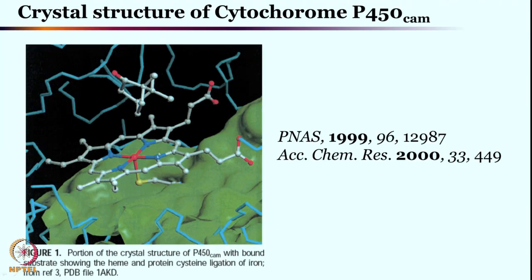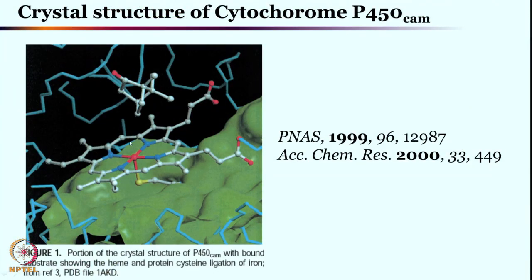Cytochrome P450's crystal structure — this is the camphor-bound crystal structure — shows the heme side, but one notable change from hemoglobin, myoglobin, and cytochrome C oxidase is the cysteine thiolate binding. Cysteine thiolate binding is different from the histidine coordination seen previously. This binding can be extremely important both for the oxygen-oxygen bond cleavage as well as for high-valent iron oxo intermediate stabilization. Upon forming and stabilizing, these iron high-valent oxo intermediates can abstract hydrogen atom from the substrate and subsequently hydroxylate the aliphatic substrate.